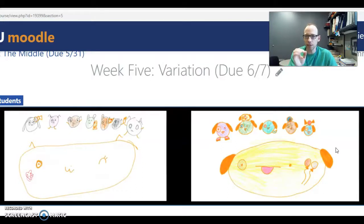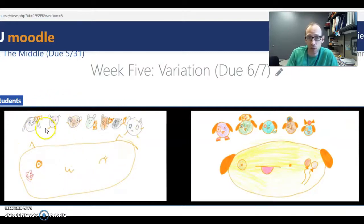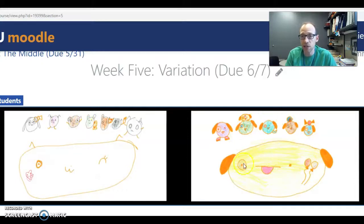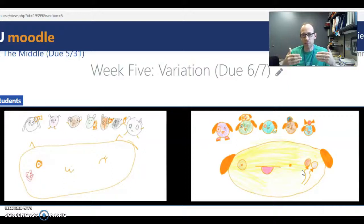Between-group variation is what we're usually looking for when we conduct statistical tests. However, it gets a little tricky when we have what's called the noise, or the within-group variation. Even within Katie's drawings of dogs, there's a lot of variation — some are small, some are large, some have certain accessories, different colors. Ellie's also has a lot of within-group variation. The more within-group variation there is, the more difficult it can be to see between-group variation.